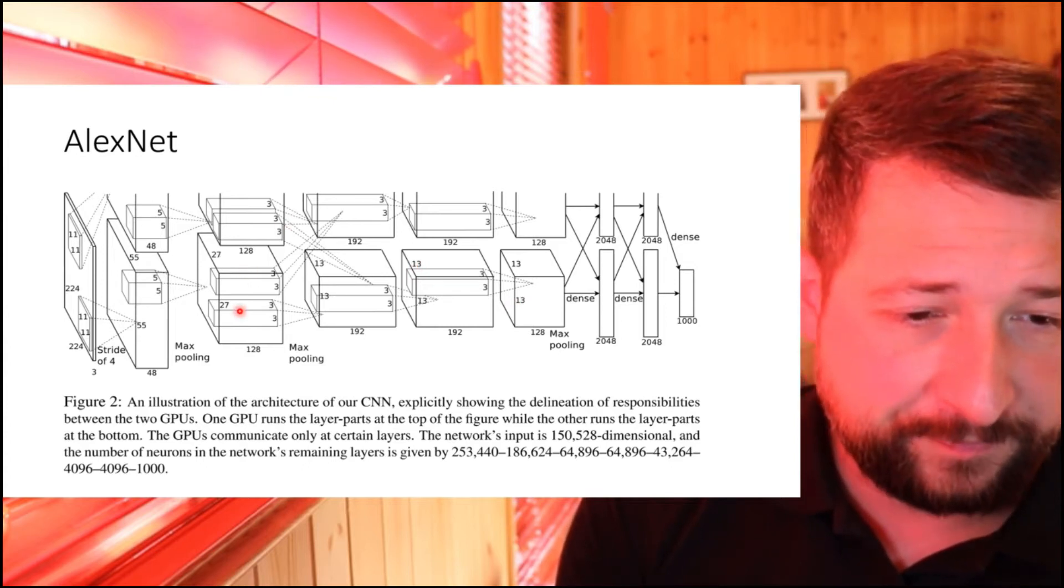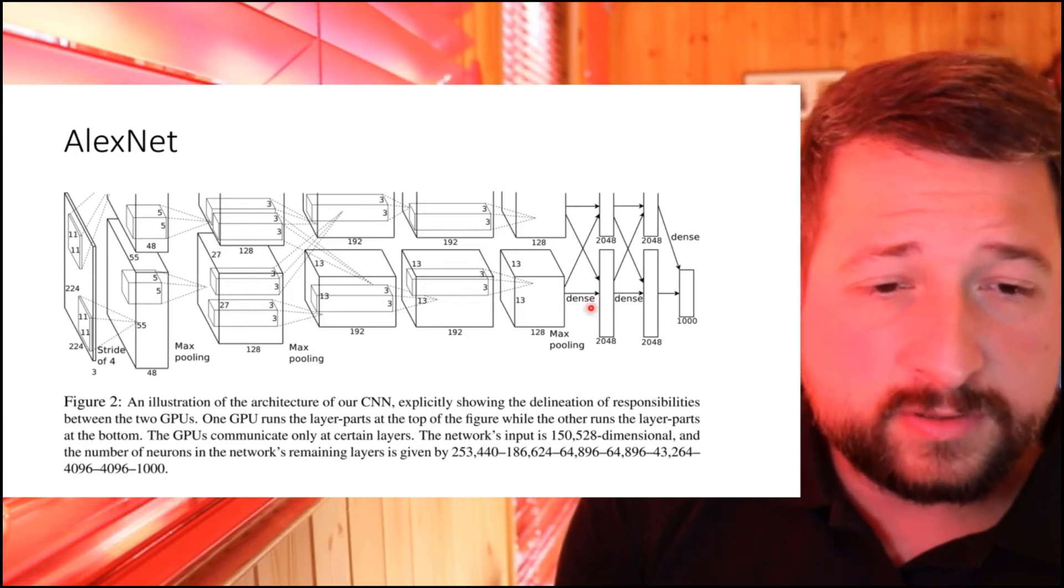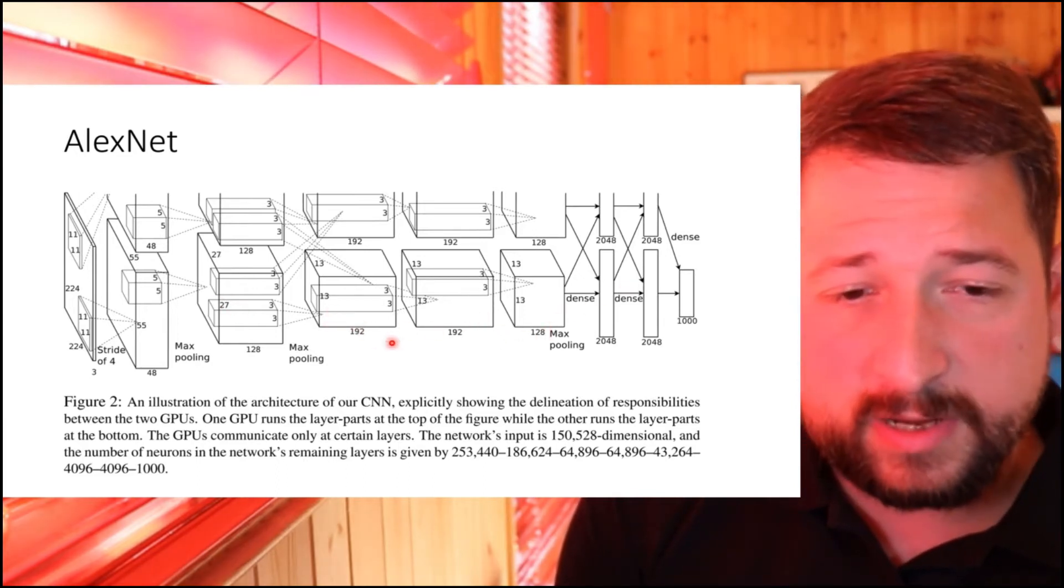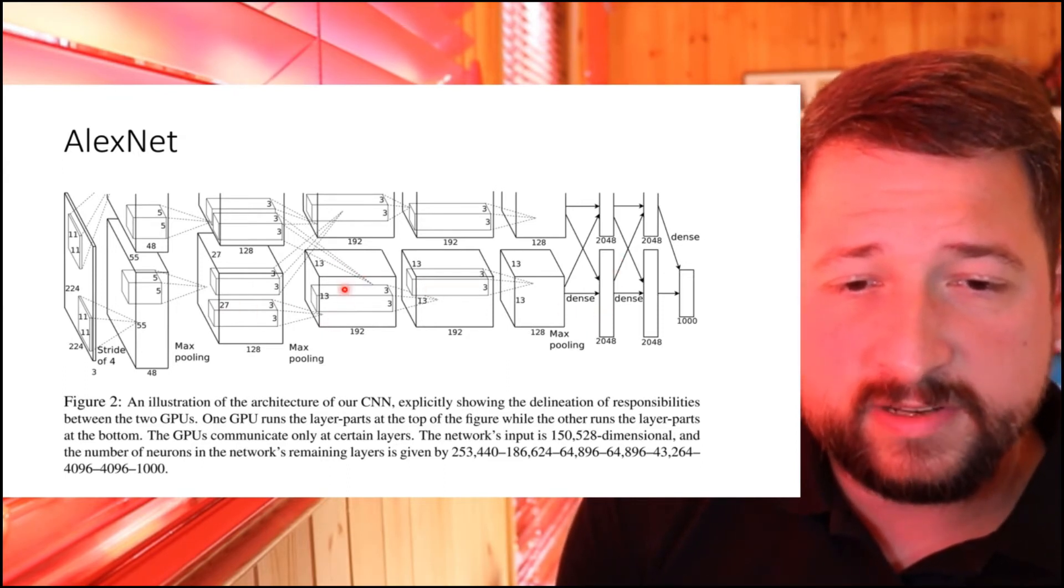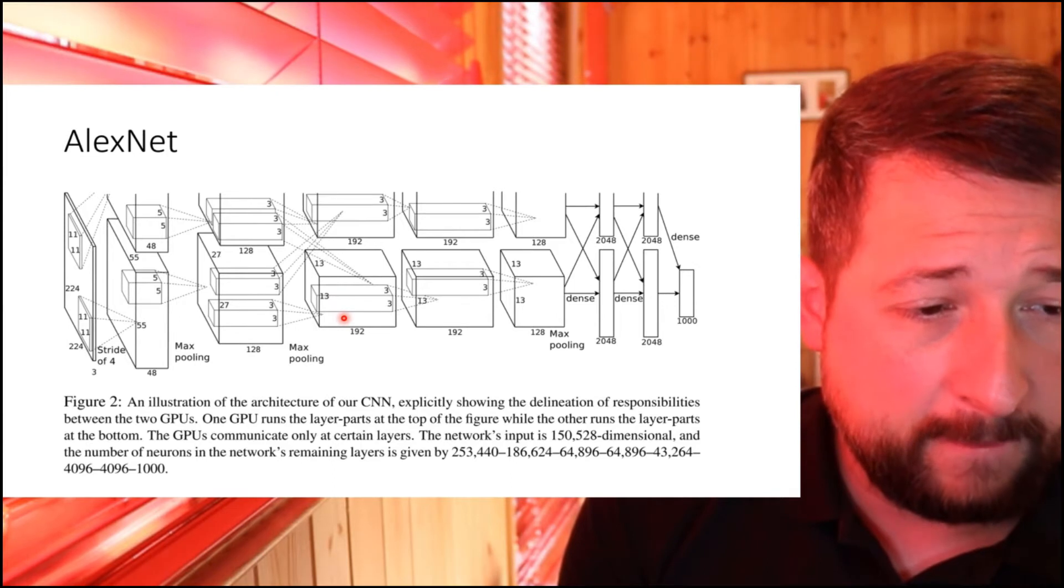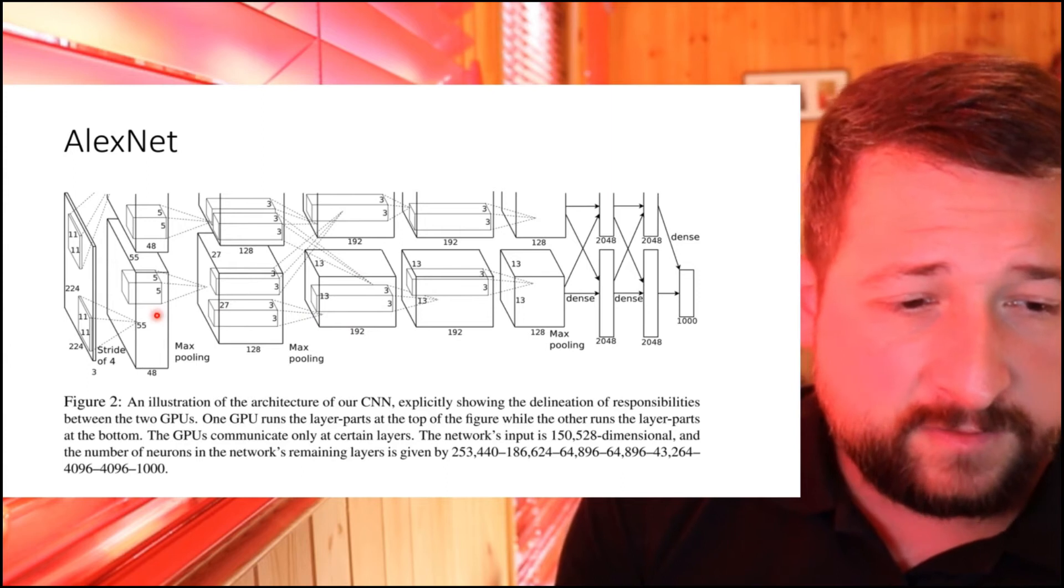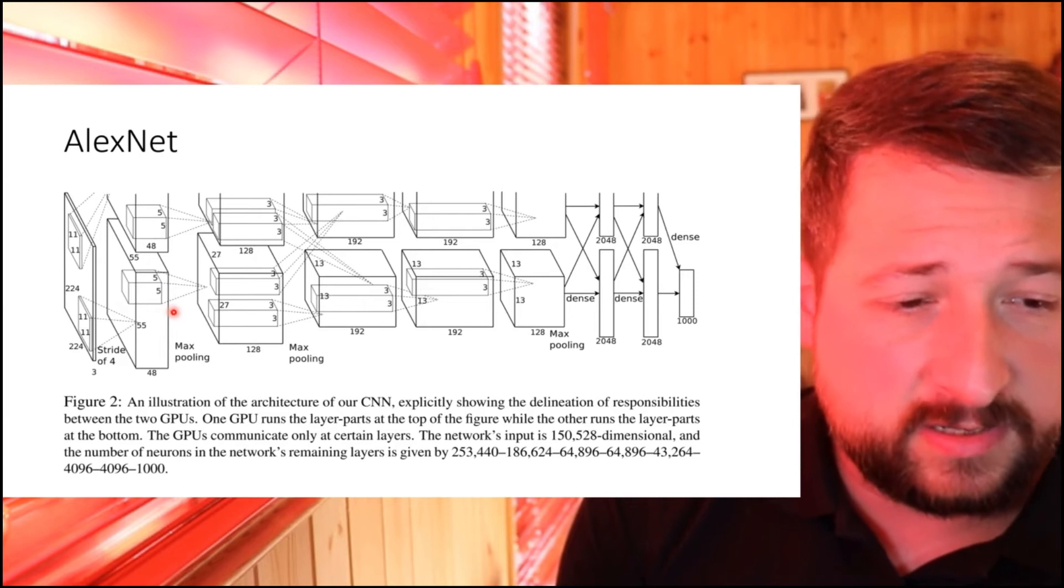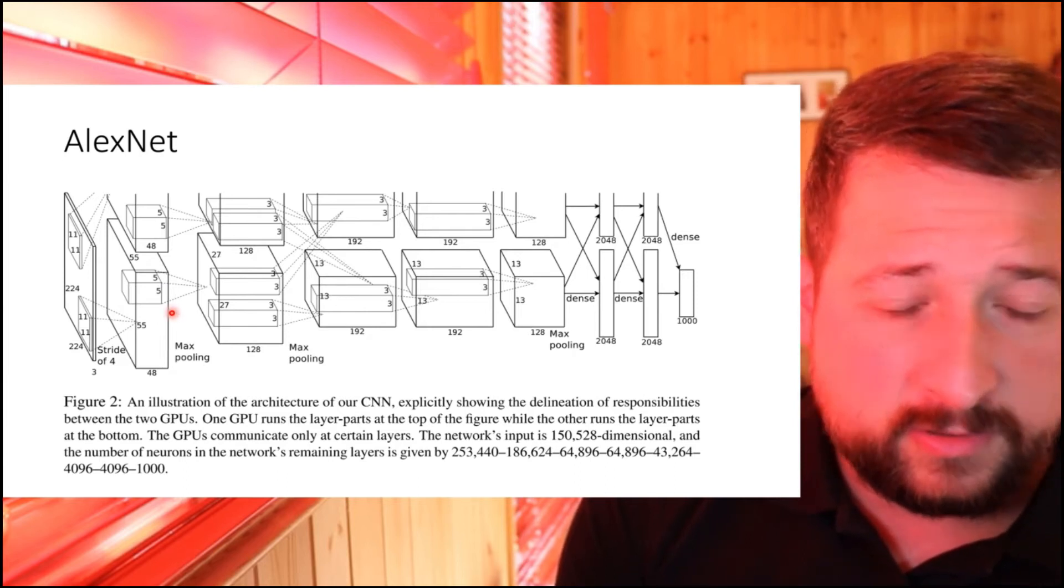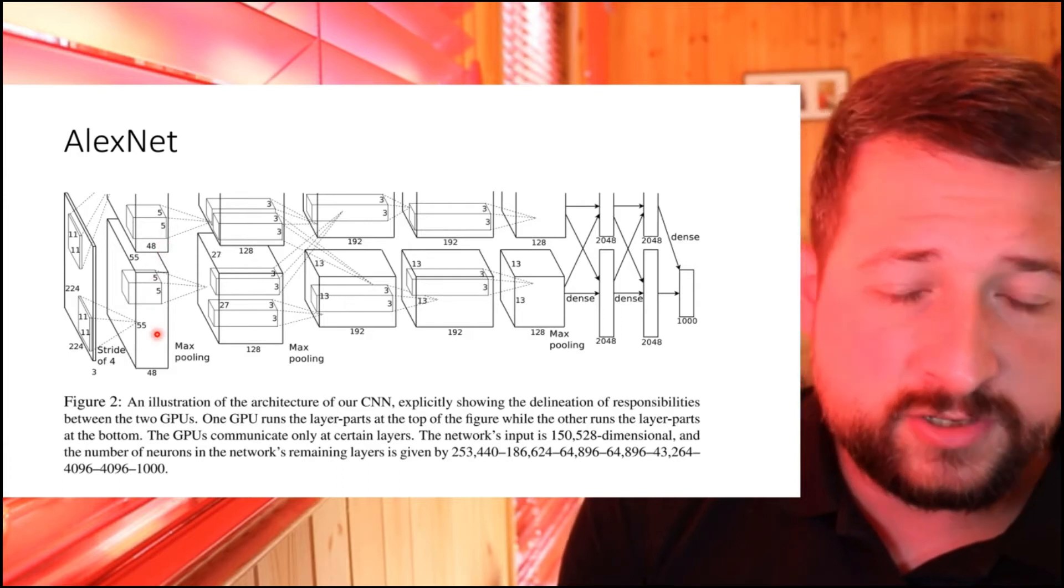What they ended up doing was they spread the network across two GPUs. So this is one GPU and this is the other GPU, exactly identical architecture here. So in each GPU you would have half of the neurons or half of the feature maps. You're halving these layers in neurons and halving these feature maps. For example, if you look at the first convolutional layer here, we have 55 by 55 by 96 output in the definition of AlexNet on each GPU. So that means on each GPU I have 48 feature maps extracted.